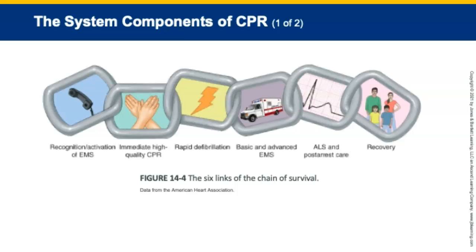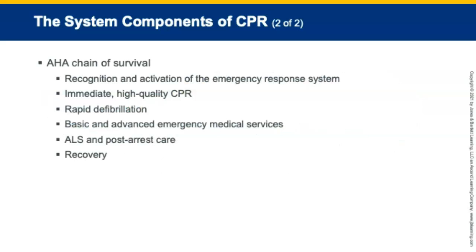The American Heart Association chain of survival includes six links, all of which must be completed: recognition and activation of the emergency response system, immediate high-quality CPR, rapid defibrillation, basic and advanced emergency services, advanced life support and post-arrest care, and recovery. If any one of those links in the chain is absent, the patient is more likely to die.